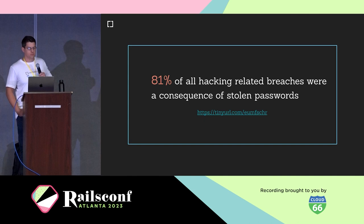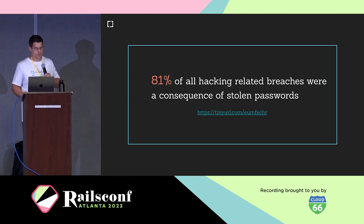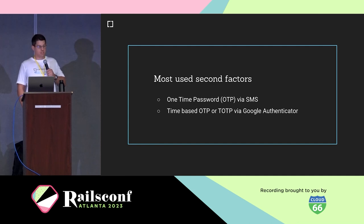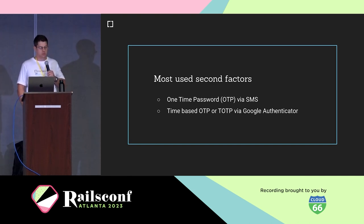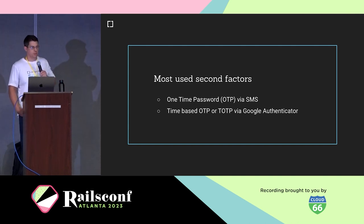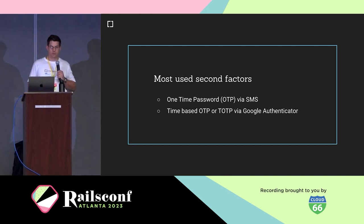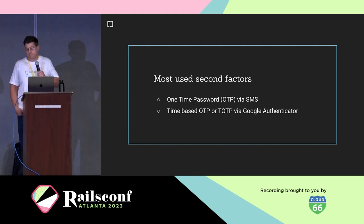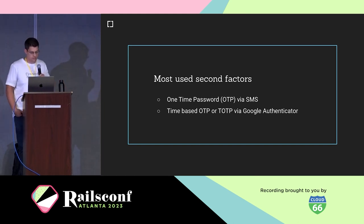81% of all hacking-related breaches were a consequence of stolen passwords. You might say nowadays we have good second factors. The most used second authentication factor is OTP through SMS — a method actually discouraged by the US government for its employees. It's prone to mobile transfers at the telecom level, interception at the infrastructure level, social engineering, phishing, and man-in-the-middle attacks.